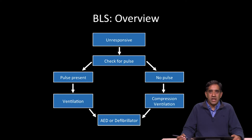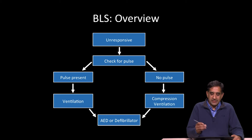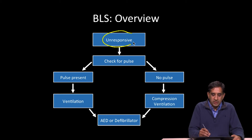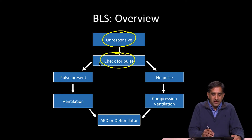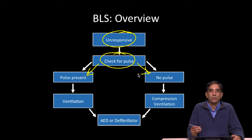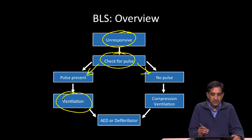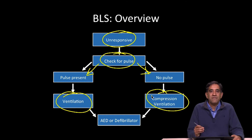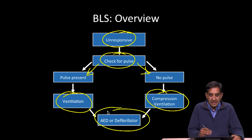If we think about basic life support in total, this is basically how we're going to go through it. First, you're going to determine if a patient is unresponsive. The next step is going to be to check for a pulse. And then based on whether they have a pulse or not, you are going to either provide only ventilation if they have a pulse, or both compressions and ventilations if they don't have a pulse, until an AED or defibrillator arrives.